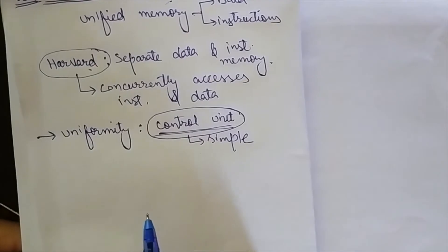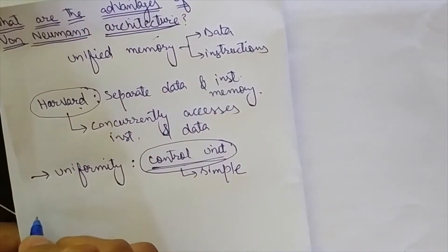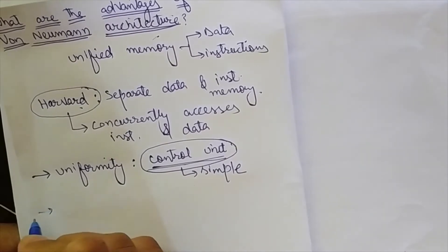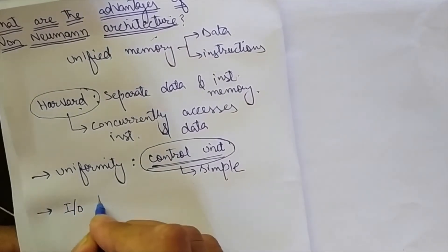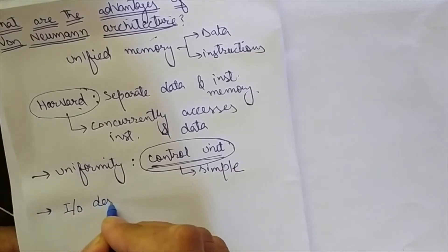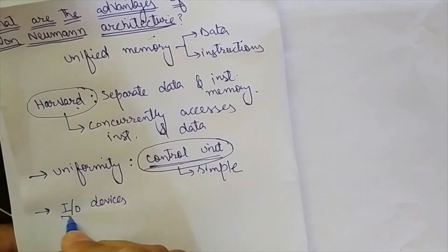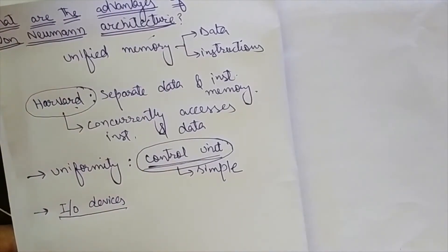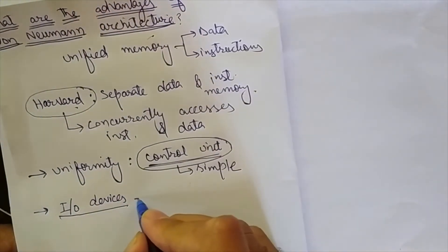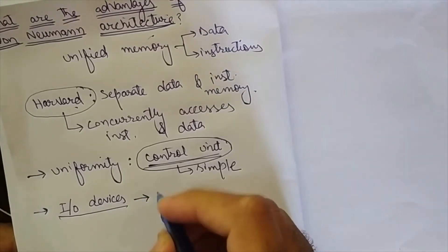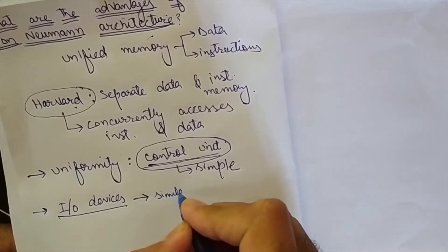The second advantage of von Neumann architecture is that data and instructions from input or output devices are retrieved in a similar manner.